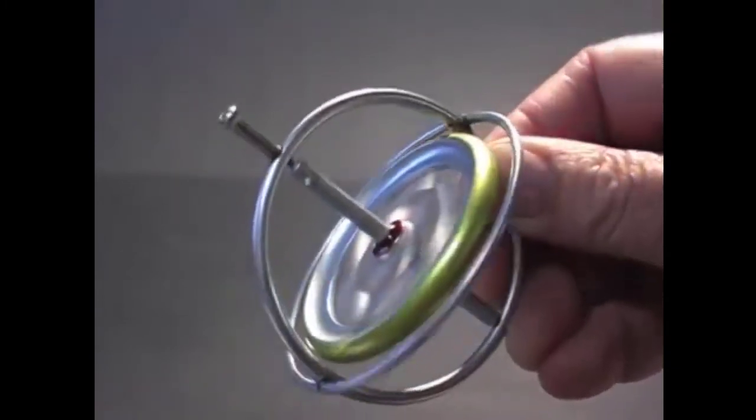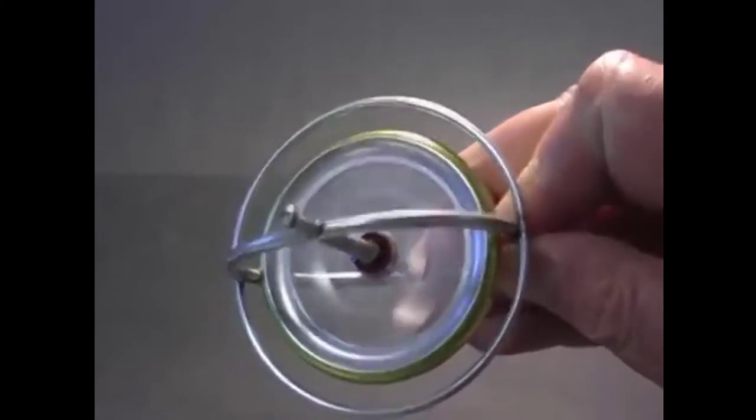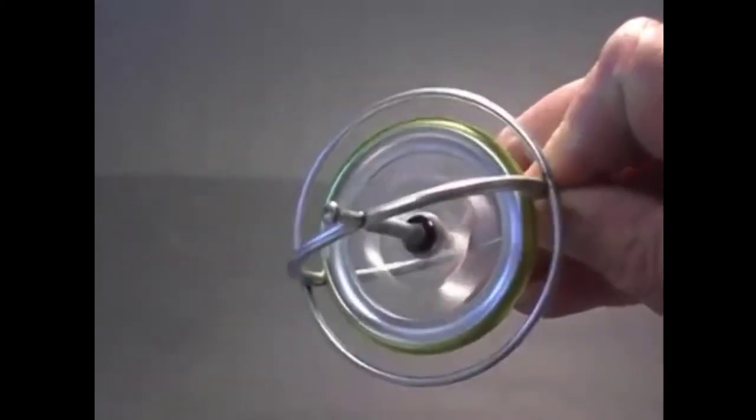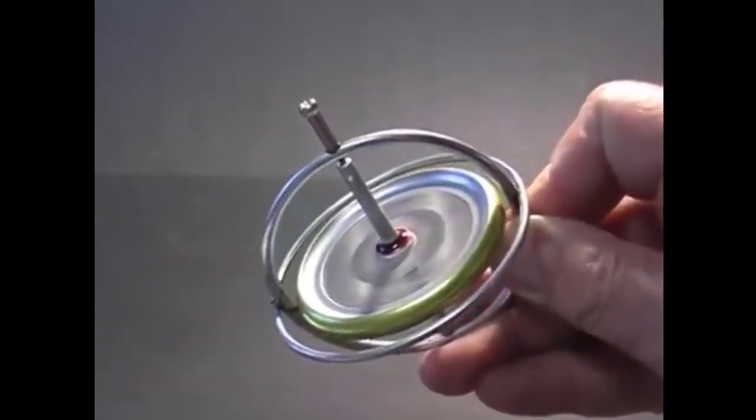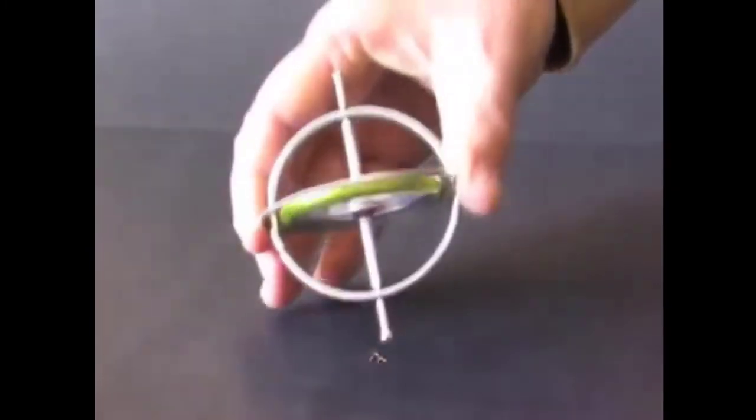The first thing I notice about the spinning gyroscope is that it resists attempts to change its position. A resistive force appears when I attempt to tilt or rotate the gyro. Now when I stand it on the tabletop, it stays vertical.